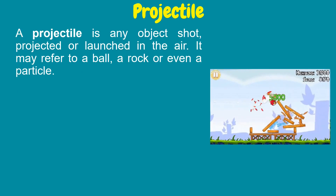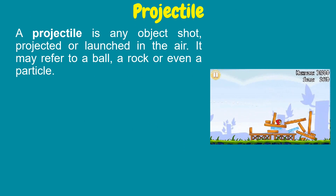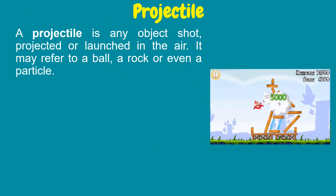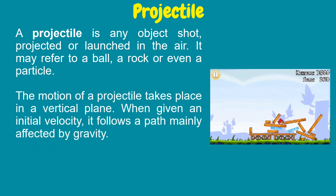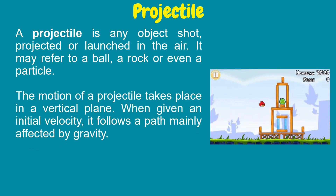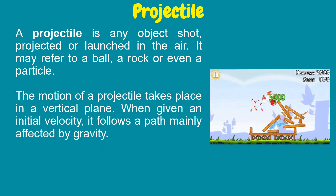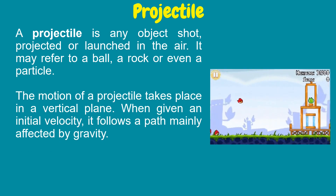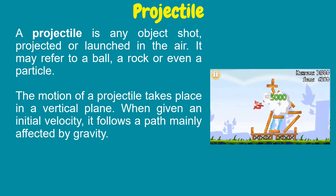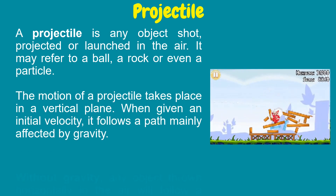A projectile is any object shot, projected, or launched in the air. It may refer to a ball, a rock, or even a particle. The motion of a projectile takes place in a vertical plane. When given an initial velocity, it follows a path mainly affected by gravity.